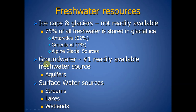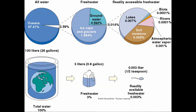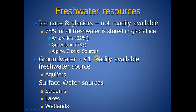The number one readily available source of freshwater is groundwater, stored in structures called aquifers. We also have surface water sources — the largest component being lakes, along with streams and wetlands. For this discussion, we're primarily going to confine our look at surficial water sources to streams.